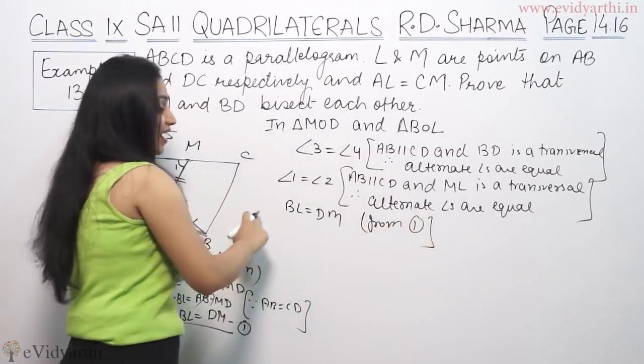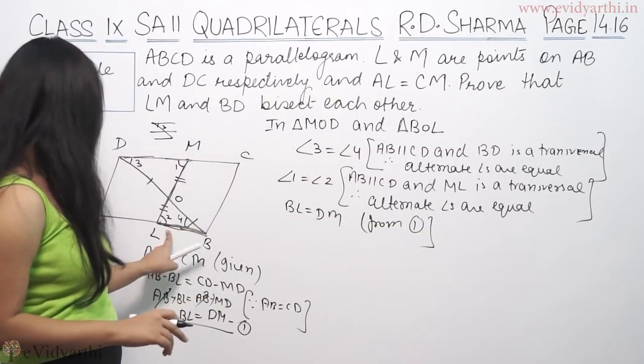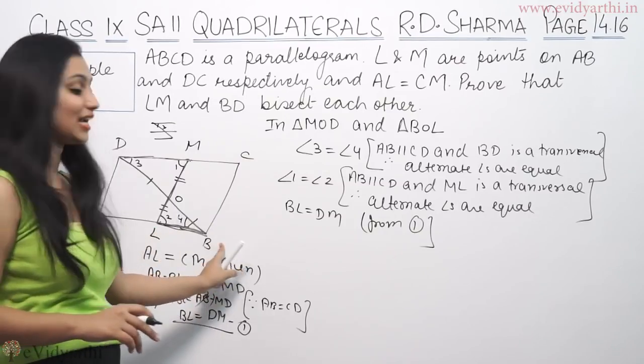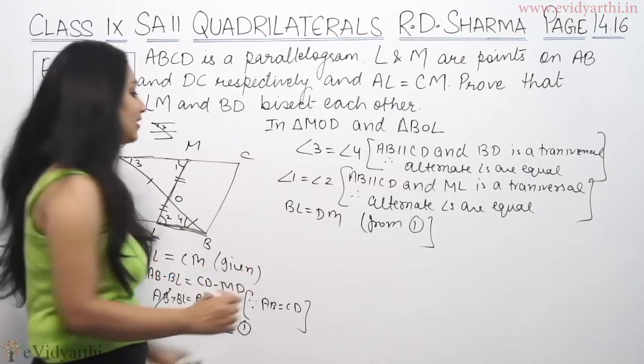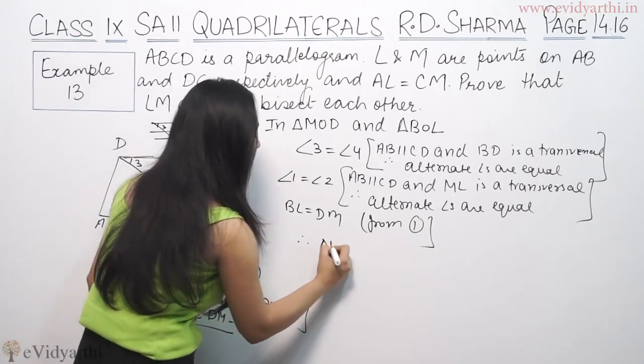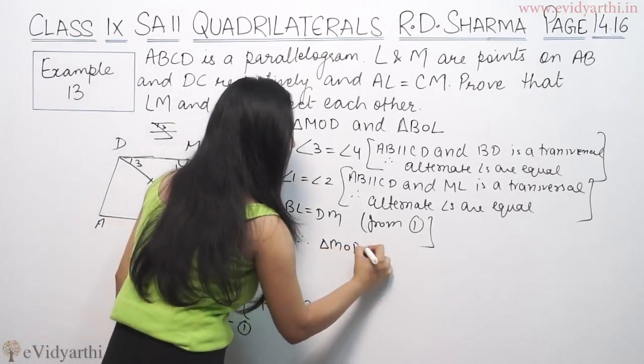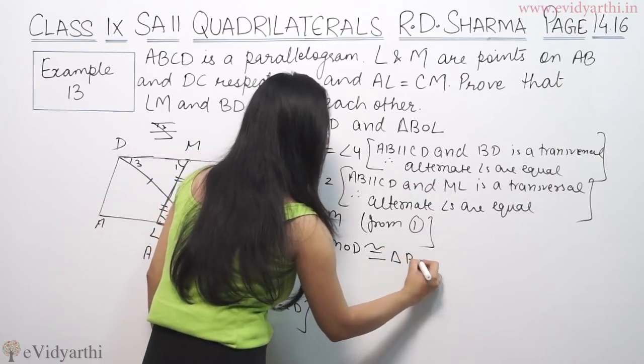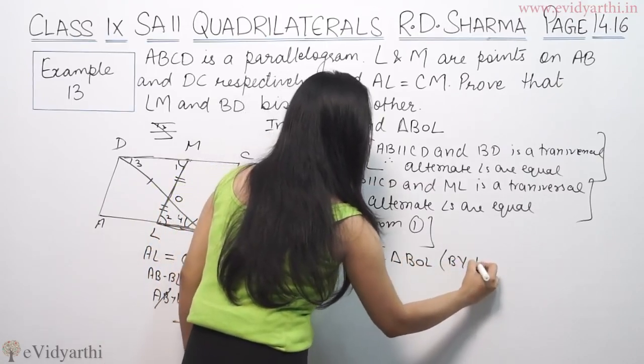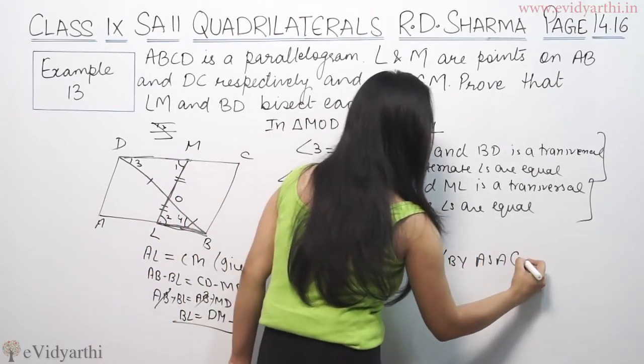So three things we have for triangle congruence: angle, side, angle. That means angle side angle. So therefore triangle MOD is congruent to triangle BOL by ASA congruency rule.